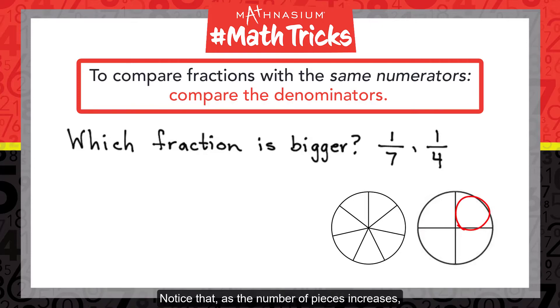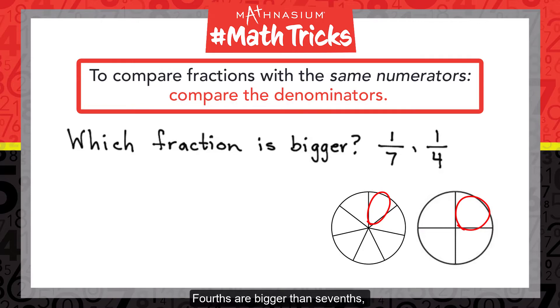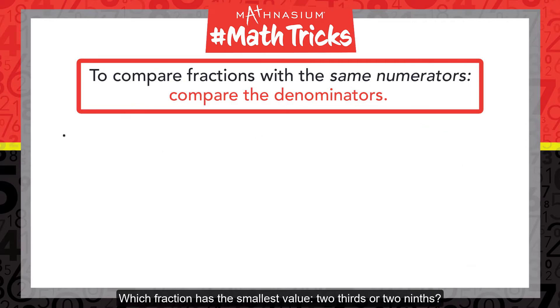Notice that as the number of pieces increases, the size of each piece decreases. 4ths are bigger than 7ths, which means 1 4th is bigger than 1 7th.